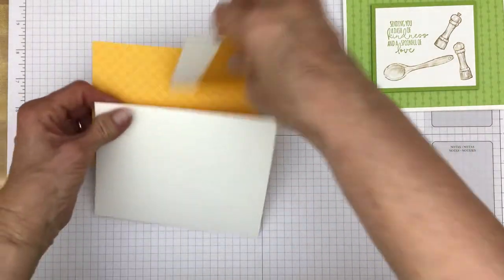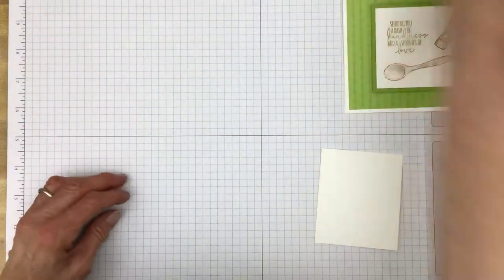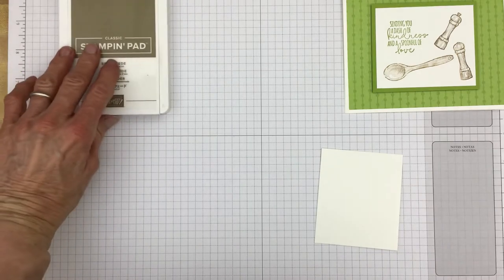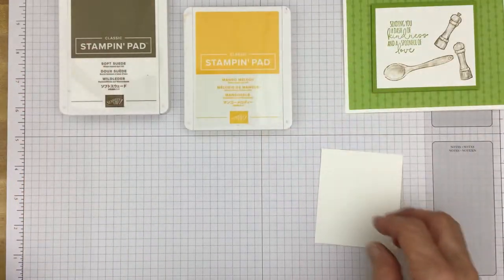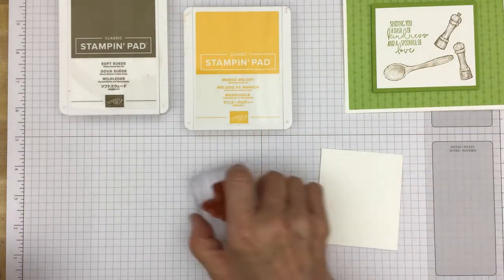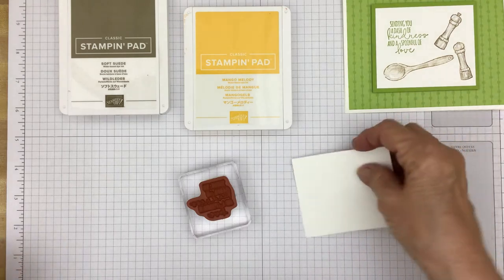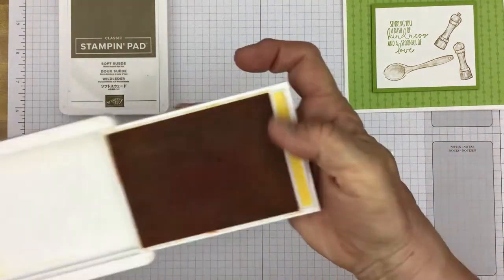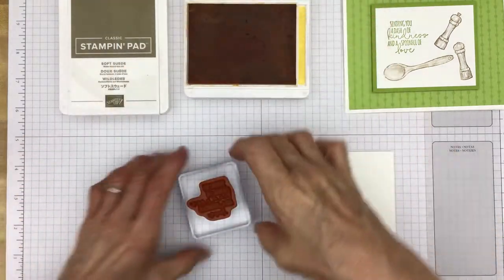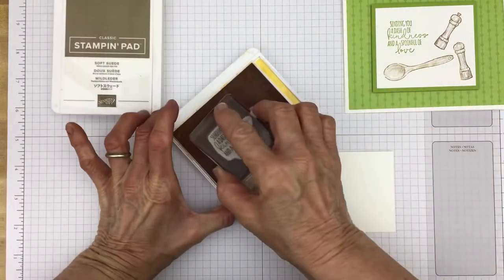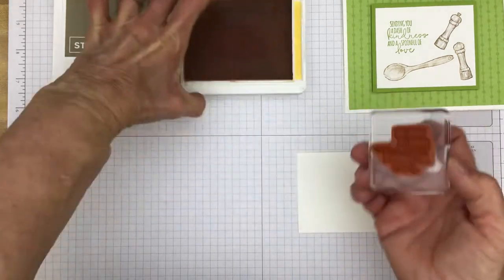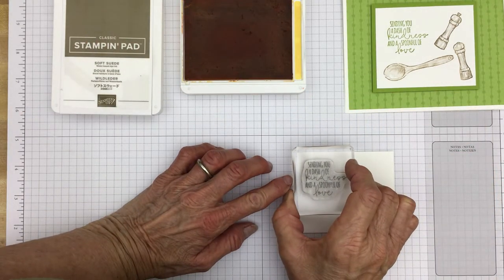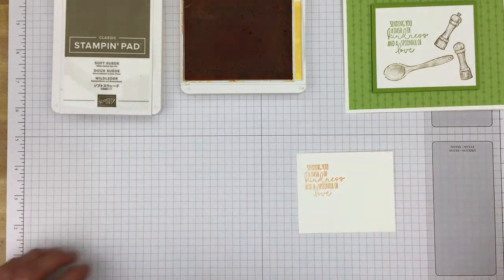So the first thing we'll do is some stamping. And we will need some soft suede and some Mango Melody. And the first thing we'll stamp is our greeting. Stamp it right in the upper left hand corner. There we go.